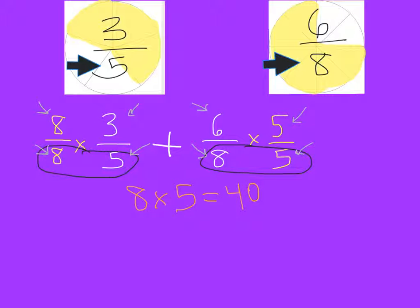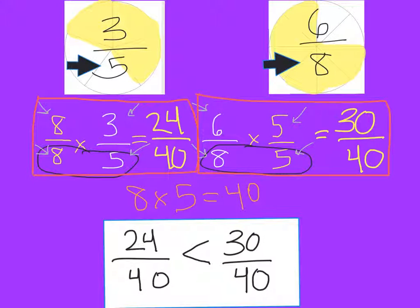For our answer, we would get twenty-four-fortieths is less than thirty-fortieths, which means three-fifths is less than six-eighths.